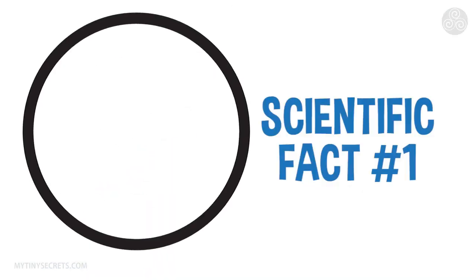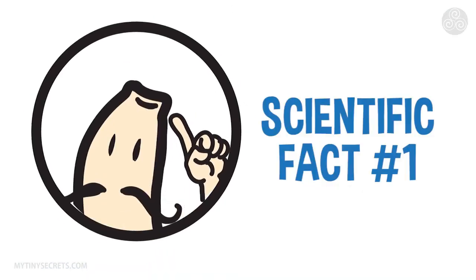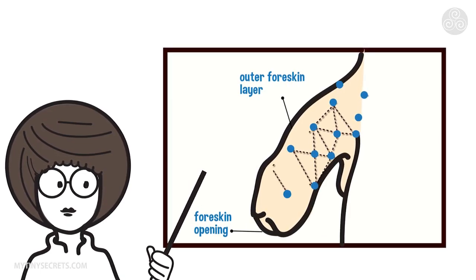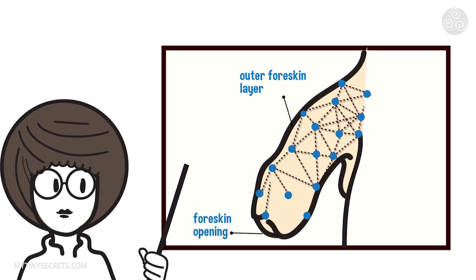So in order to properly analyze this, let us look at some scientific facts about the foreskin. The foreskin contains up to 20,000 nerve endings, which makes up about half the nerve endings of the entire penis.